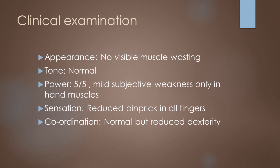Clinical examination is relatively unremarkable in terms of appearance. There's no visible muscle wasting. Tone is normal in the upper limb. Power is 5 out of 5 with only mild subjective weakness in the hand muscles. Sensation shows reduced pinprick in all fingers and coordination is normal, but there is reduction in dexterity.